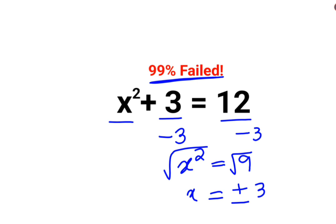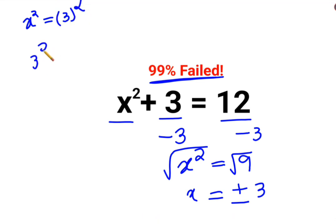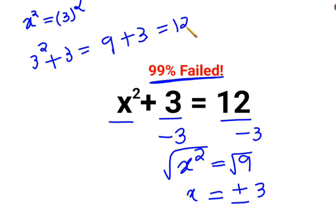Let's verify. Instead of x squared, we will put 3 — so 3 squared, which is written as 3 squared plus 3. That gives us 9 plus 3, which equals 12. That is correct.